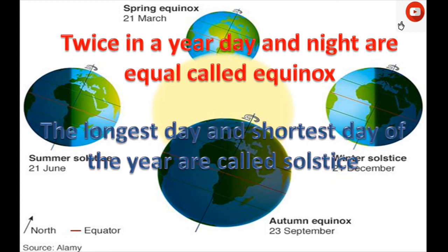The longest day and shortest day of the year are called solstice. Summer solstice occurs on 21st June, which is the longest day of the year. Winter solstice occurs on 21st December, which is the shortest day of the year.